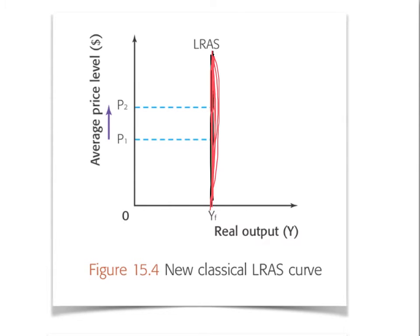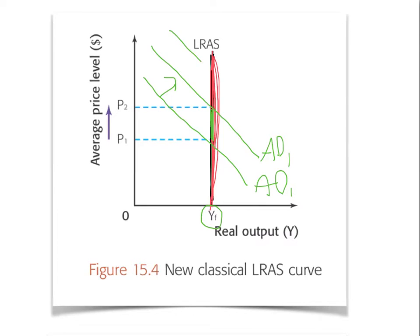The LRAS is independent of the price level. If we were to superimpose an aggregate demand curve here — say AD1 — and then there were an increase in consumption so demand shifted outward, what this curve tells us is that because this is the potential output of the economy, no matter how much demand there is, it will only have inflationary pressure on prices. In the long run, this is the maximum potential output, and all that would happen is prices would go up — what's called demand-pull inflation.